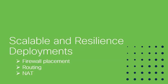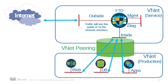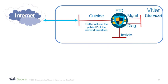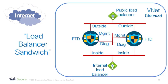We want to replace this with a scalable and resilient deployment. Focusing on the service VNet, we're going to replace the single firewall with multiple firewalls — in this case, two. We have a public load balancer for the outside interface and an internal load balancer for the inside interface. This is called a load balancer sandwich, but don't be misled — the traffic never goes through both load balancers.